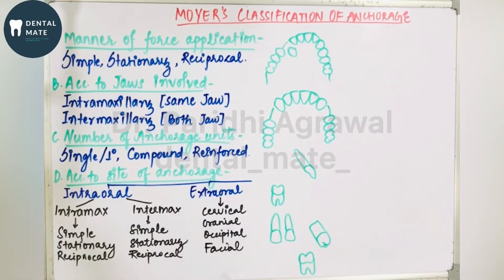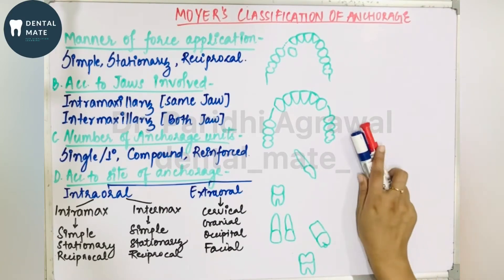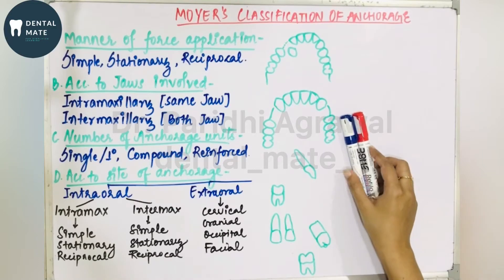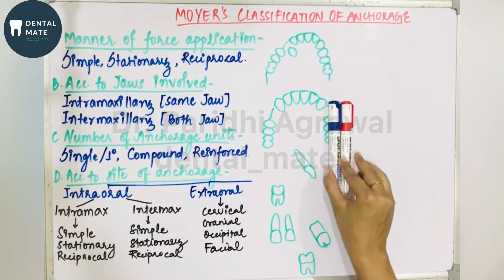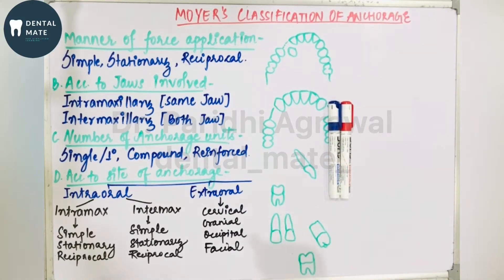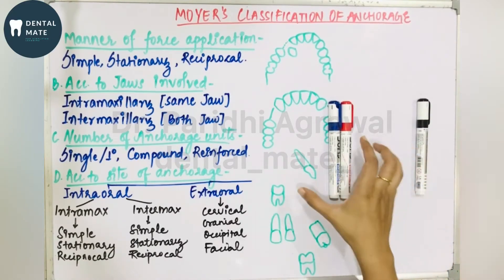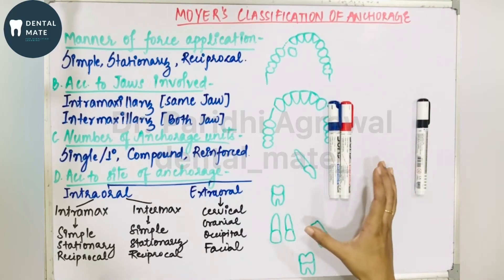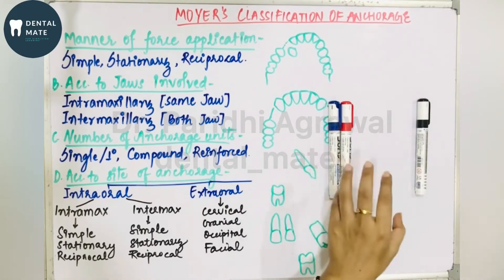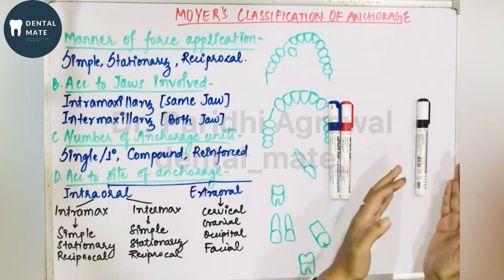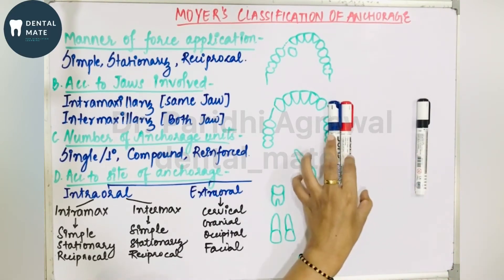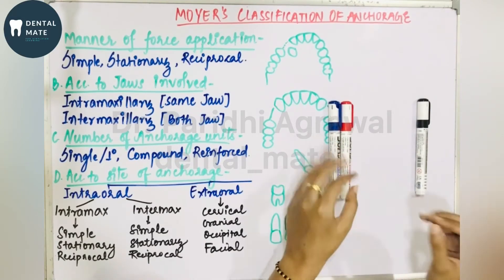Let us imagine a situation in which we have a molar — this is the crown and root — acting as the anchor unit, and we need to retract a canine. With the support from the molar as the anchor unit, we are retracting the canine. Along with the retraction, there is some movement of the anchor unit also.